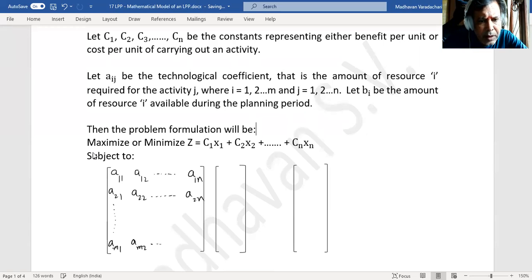Times the decision variables x1, x2, and so on up to xn. So it is like a matrix multiplication. If I multiply, first row will get multiplied with this, so a11x1 plus a12x2 and so on a1nxn, like that it will be.